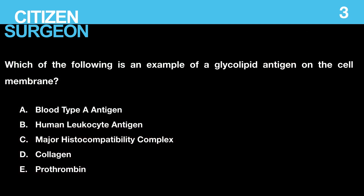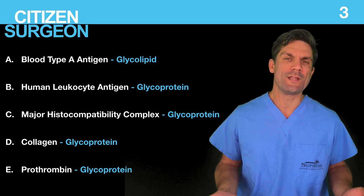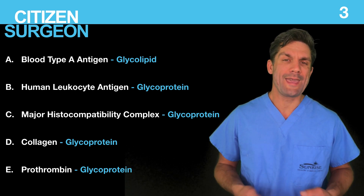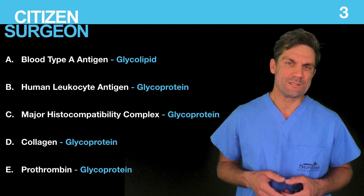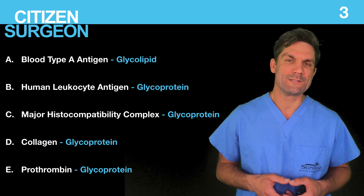Question three: which of the following is an example of a glycolipid antigen on the cell membrane — blood type A antigen, human leukocyte antigen, major histocompatibility complex, collagen, or prothrombin? If you guessed blood type A antigen, that is correct. The blood types, whether A or B, are glycolipid antigens. The other molecules listed — HLA, MHC — are typically glycoproteins and not glycolipids.